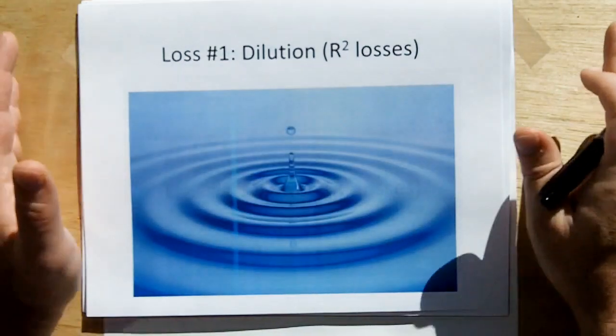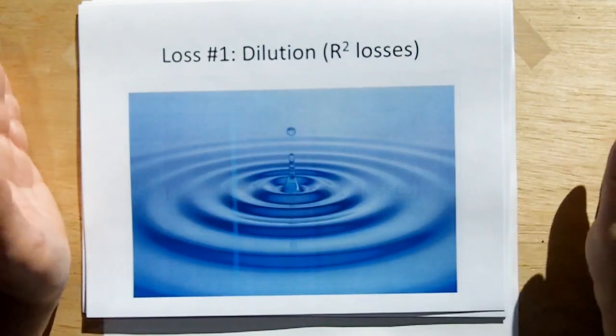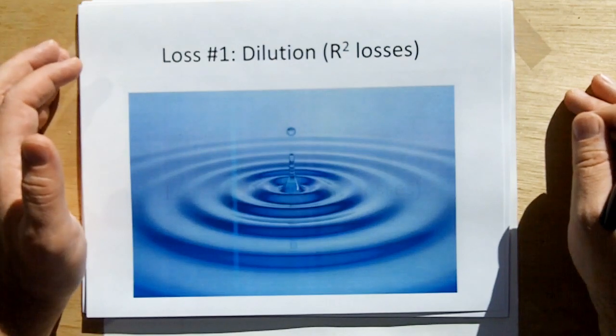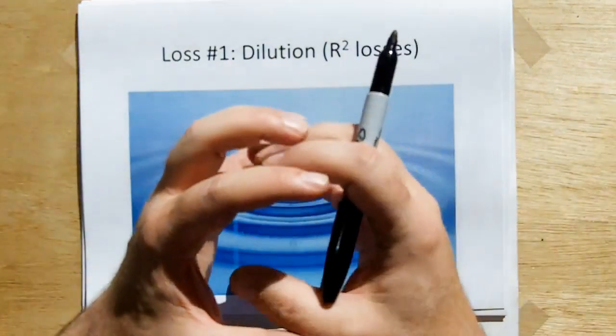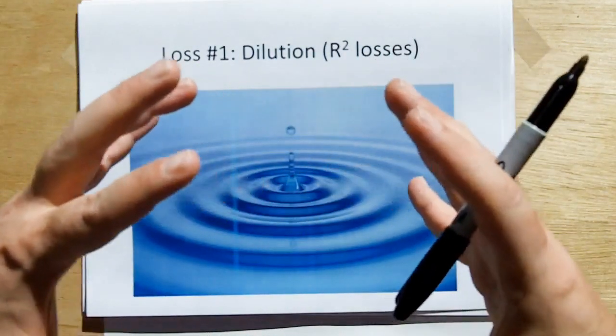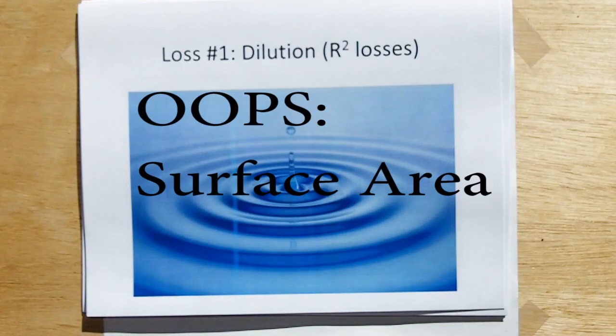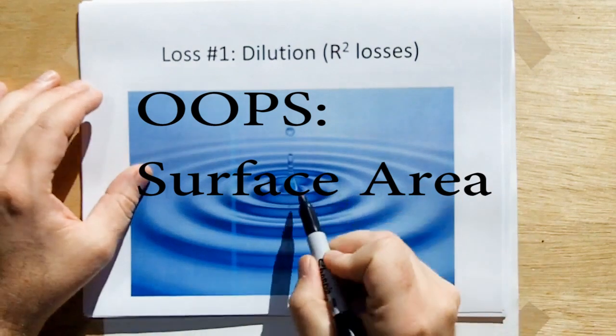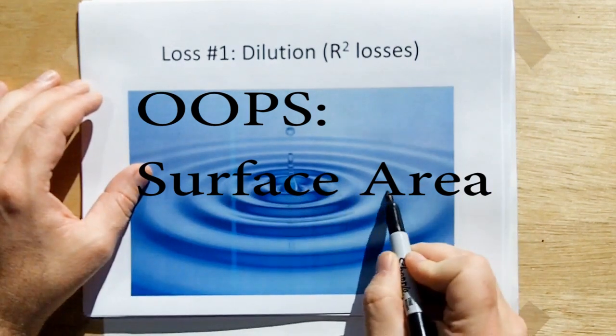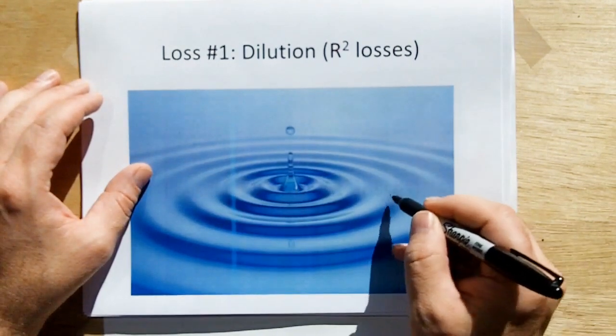The first loss, which really isn't a loss, but we call it a loss. In engineering, we call it R-squared losses. Because as a ball of light progresses out, that light gets diluted over the volume. Just like these water waves, as they travel out, you can see their intensities, their amplitudes getting lighter and lighter and lighter.